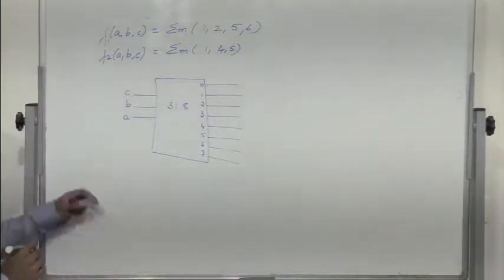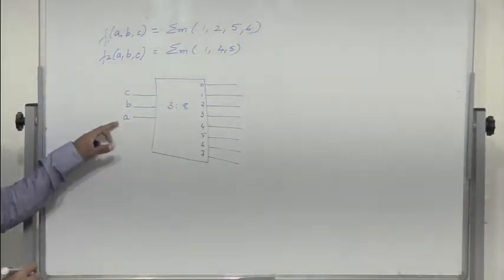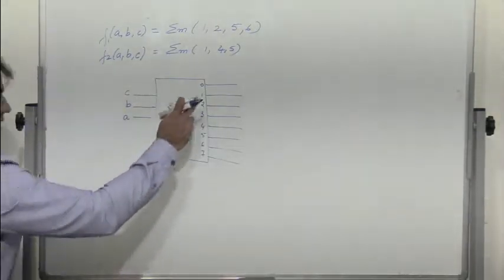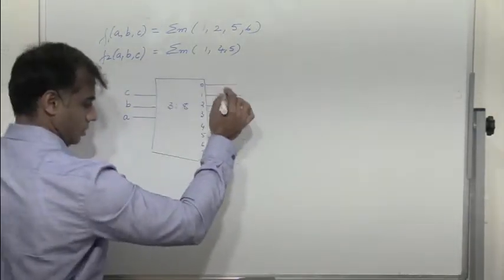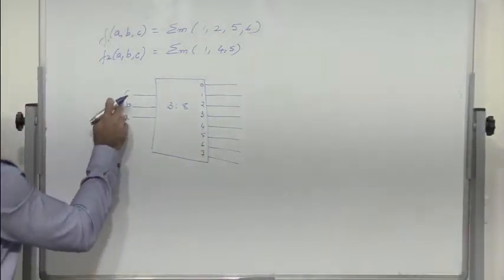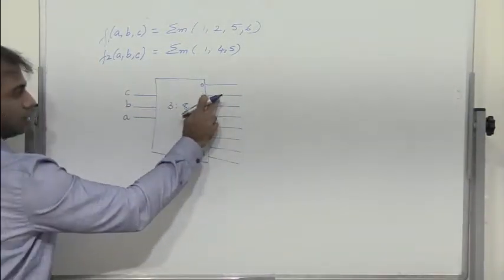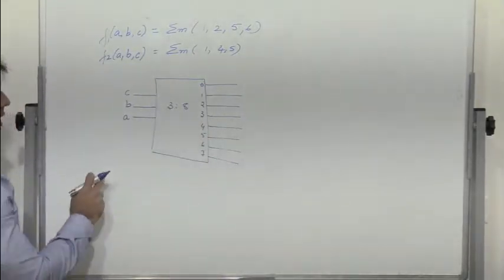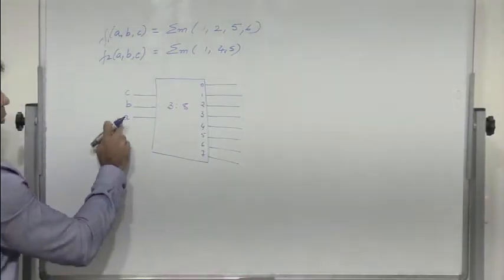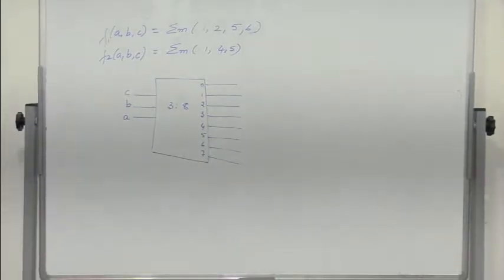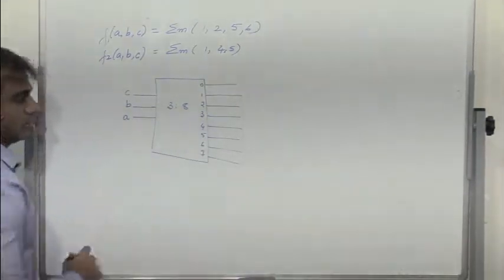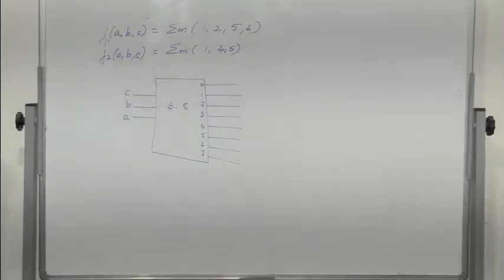C is the LSB and A is the MSB. When A, B, C are all 0, line 0 is high. When we have 0,0,1, line 1 is high. When we have 0,1,0, line 2 is high. When we have 0,1,1, line 3 is high, and so on. When we have 1,1,1, line 7 is high.